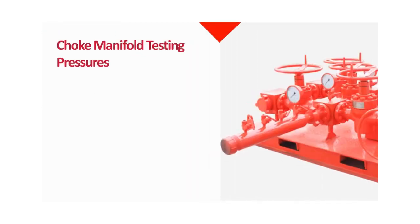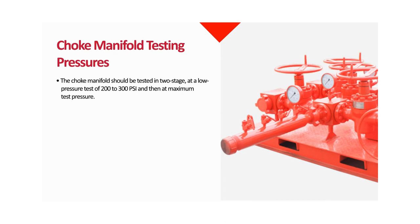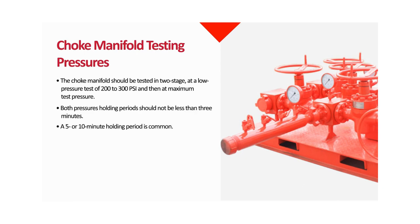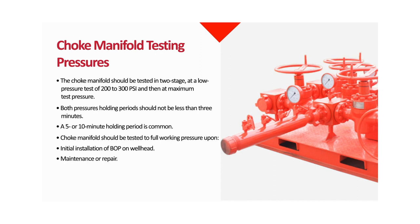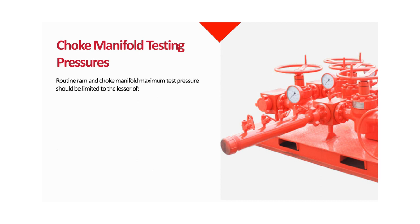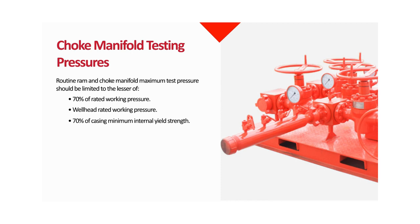Choke manifold testing pressures. The choke manifold should be tested in two stages: at a low pressure test of 200 to 300 PSI, and then at maximum test pressure. Both pressure holding periods should not be less than 3 minutes; a 5 or 10 minute holding period is common. The choke manifold should be tested to full working pressure upon initial installation of BOP on the wellhead. For maintenance or repair, only the affected components need to be tested. Routine RAM and choke manifold maximum test pressure should be limited to the lesser of 70% of rated working pressure, wellhead rated working pressure, or 70% of casing minimum internal yield strength.